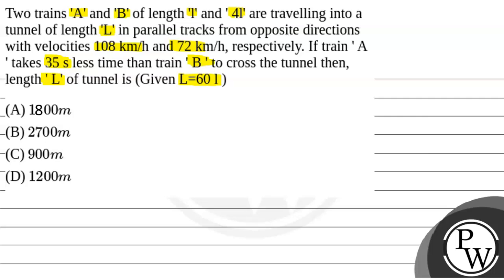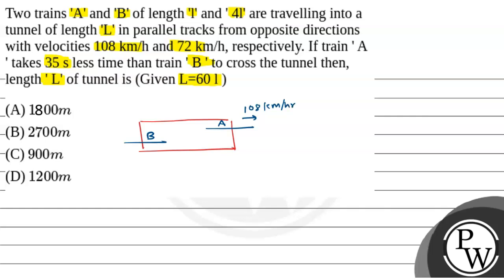Now, let's understand the question. Here we have a tunnel. Train A and train B are travelling in opposite directions. So, let's say this is train A and this is train B. Train A is moving at 108 km per hour and train B is moving at 72 km per hour.